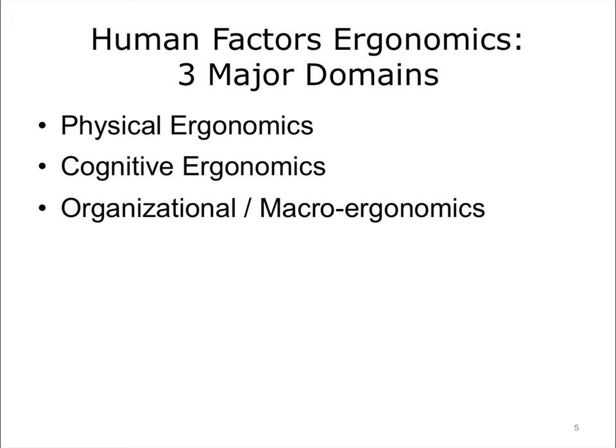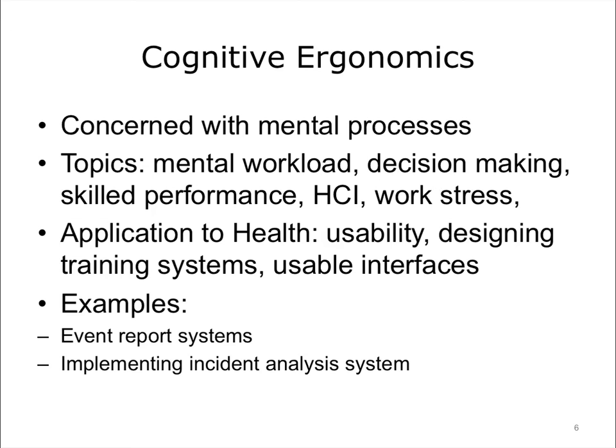We can characterize the three main domains shown on this slide. For this unit, we will focus on cognitive ergonomics, which is concerned with the mental processes. Cognitive ergonomics includes mental workload, an issue that we will come back to later, and usability of systems. This lecture focuses predominantly on cognitive issues.